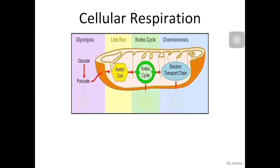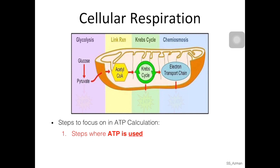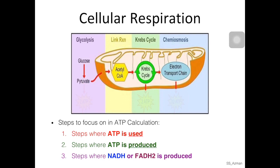The previous videos have explained in detail the steps in each reaction, so I'm not going to focus on that. What I'm going to focus on in this video is the steps that are important for our ATP calculations. When we want to calculate the number of ATPs, we have to focus on: steps where an ATP molecule is being used, steps where ATP is being produced, and steps where NADH or FADH2 molecules are being produced. These two molecules are important because NADH and FADH2 will be used in oxidative phosphorylation to produce ATP molecules.